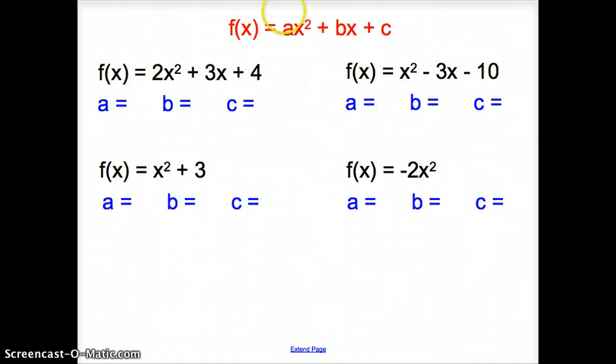Now here, remember this is the standard equation for a quadratic function. We want to point out all our a, b's, and c's. Notice where my a is. My a is attached to the x² term. My b is attached to my x, and c is my single number. So here, what is my a? Well, the 2 is attached to the x² term, so my a is 2, my b is 3, and here my c is 4.